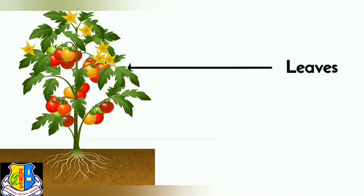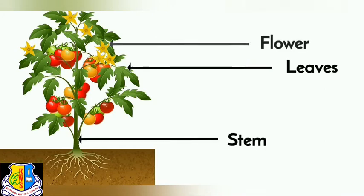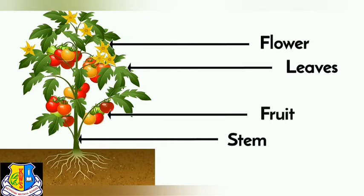The five parts are: leaves, stem, flower, fruit and roots.